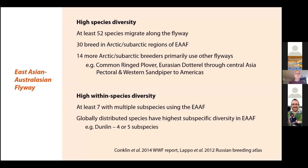There's also high within-species diversity — at least seven species on the flyway are represented by multiple described subspecies. In some cases we have globally distributed species that have their highest subspecific diversity in this flyway. A great example is the dunlin, where there are four or five subspecies using just this flyway.